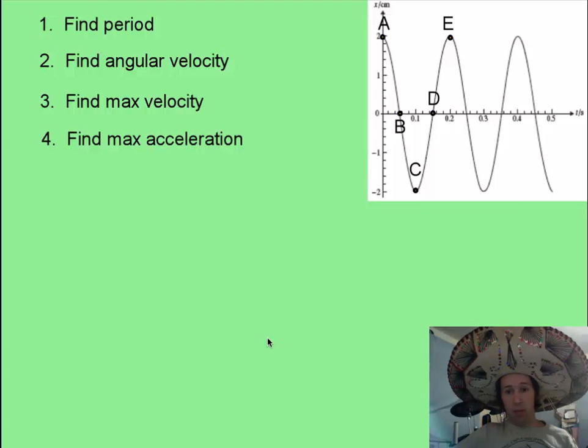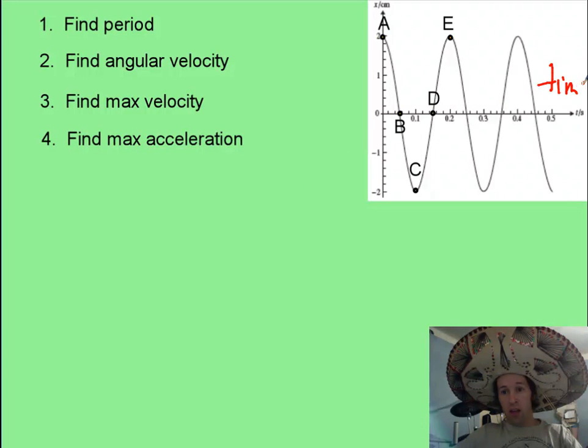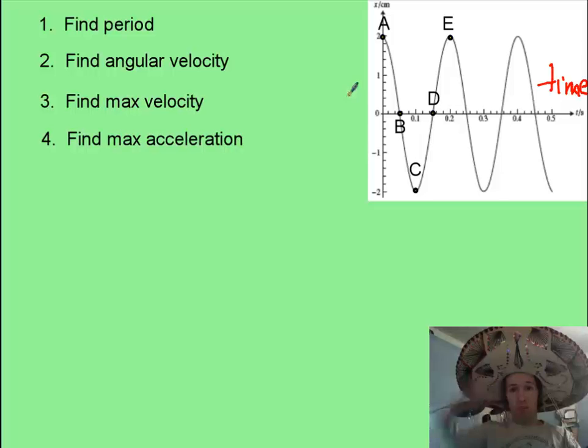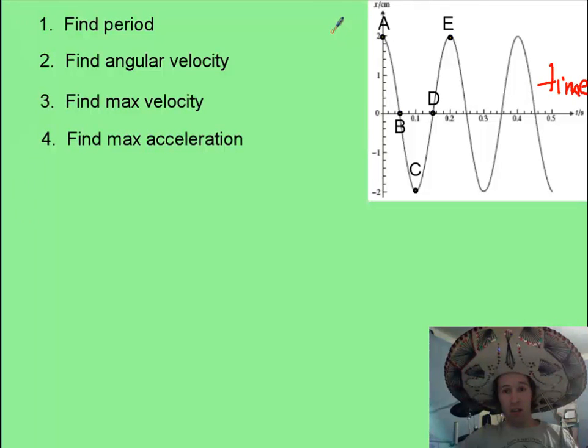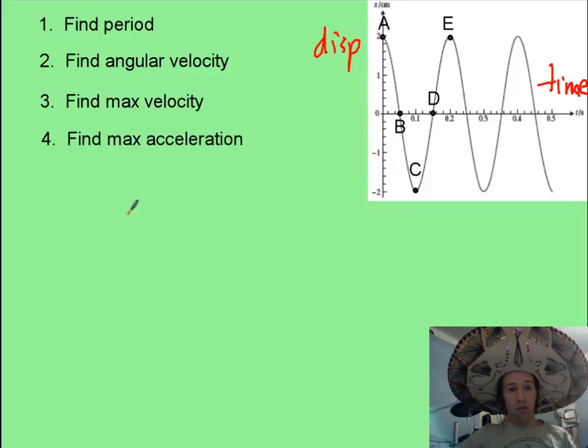Now here's a sample problem with a graph that I'd like you to give a try. We've got time on our x-axis here, and the displacement, you can say it's something bouncing around again if you'd like, displacement on the y-axis. Try and solve these four situations. Numerical answers please. Pause it. See what you can do.